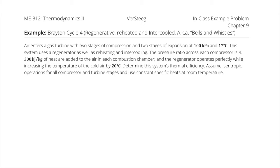Air enters a gas turbine with two stages of compression and two stages of expansion at 100 kPa and 17°C. This system uses a regenerator as well as reheating and intercooling. The pressure ratio across each compressor is 4, and 300 kJ per kg of heat are added to the air in each combustion chamber.